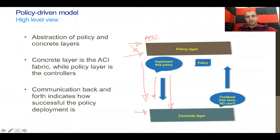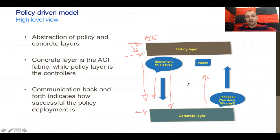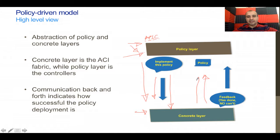If there are things that cannot be done, the concrete layer will go back and say this cannot be implemented — for example, the port is down, there's a duplicate configuration on the same port, the policy targets a port that is down, or parameters contradict existing operational parameters. Whatever the reason, there is feedback. There is continuous communication between the policy layer and the concrete layer, with confirmation: either it's done, or it cannot be done and here's why.